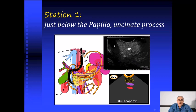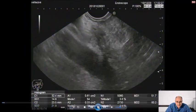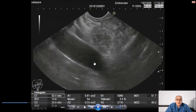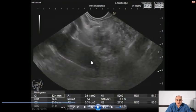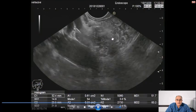We can see a longitudinal tubular structure — this is the abdominal aorta appearing in longitudinal section. The part of the pancreas related to this abdominal aorta is the uncinate process of the pancreas, seen from the deep second part of the duodenum, just below the papilla. Scanning from this position with slight upward deflection by the big wheel, you can see the longitudinal structure which is the abdominal aorta.